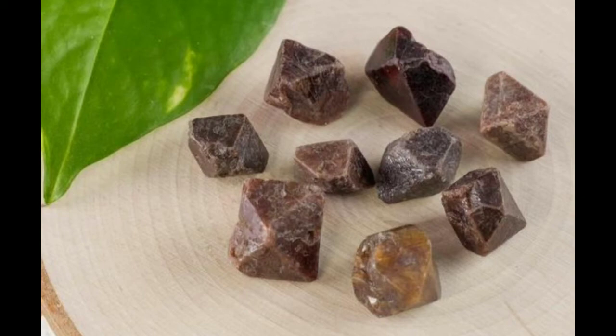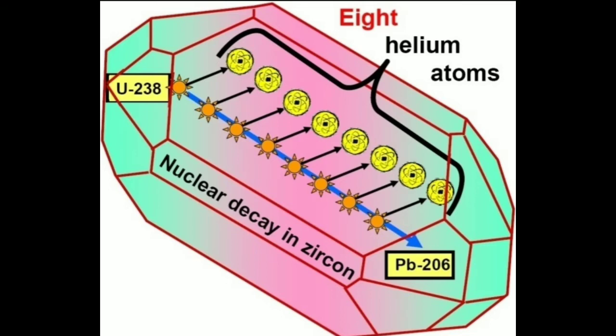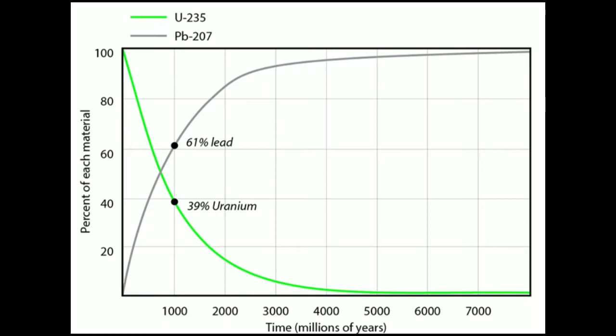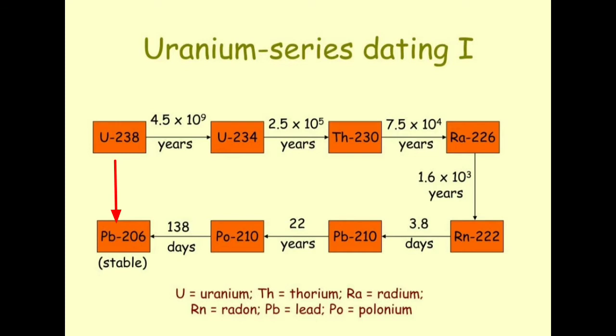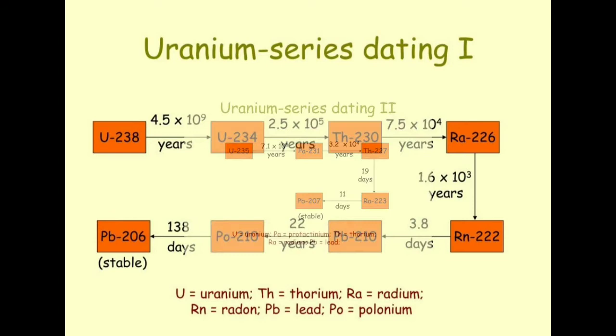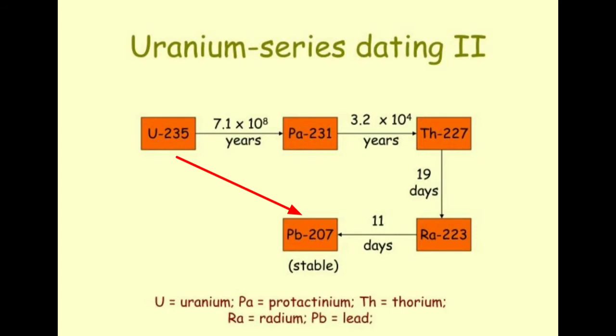As a result, newly formed zircon deposits will contain no lead, meaning that any lead found in the mineral is radiogenic. Since the exact rate at which uranium decays into lead is known, the current ratio of lead to uranium in a sample of the mineral can be used to reliably determine its age. The method relies on two separate decay chains: the uranium series from uranium-238 to lead-206 with a half-life of 4.47 billion years, and the actinium series from uranium-235 to lead-207 with a half-life of 710 million years.